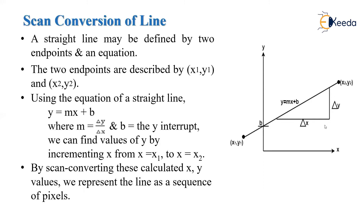Here m is the slope of the line and b is the y-intercept. So m is the difference in the y direction, that is delta y, divided by the difference in the x direction, that is delta x. By scan converting these calculated x and y values, we can represent the line as a sequence of pixels.